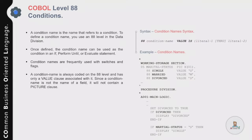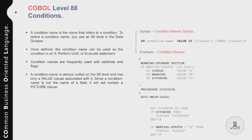The syntax begins with level number 88, followed by a condition name, and then a value clause to specify the value. In the example, a variable MARITAL-STATUS is defined with a length of one and an alphanumeric data type. The three possible values are S (single), M (married), and D (divorced), all defined as level-88 condition names — SINGLE, MARRIED, and DIVORCED.